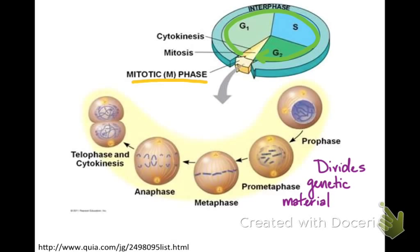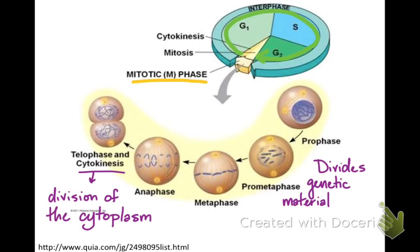Since all eukaryotes have nuclei, they must divide the nucleus before they can divide the cytoplasm. They have to make sure all of that genetic material is tucked back safely inside a nucleus. We also have a phase for the division of the cytoplasm, and that's called cytokinesis.